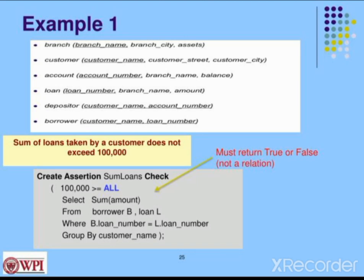We have six tables and attributes. Branch: branch name, branch city, assets. Customer: customer name, customer street, customer city — customer name is the primary key. Account: account number, branch name, balance. Loan: loan number, branch name, amount. Depositor: customer name, account number. Borrower: customer name, loan number.